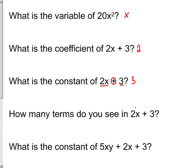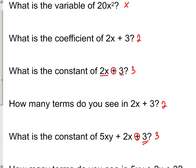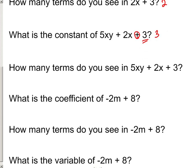How many terms do you see in 2x + 3? Well, we've looked at it right here. Here's the plus sign, so here's the first term, there's the second term, so there are two terms. And what's the constant of 5xy + 2x + 3? It's a term that has no variable, and so 3 would be our constant. How many terms do you see in 5xy + 2x + 3? Well, first term, second term, third term.